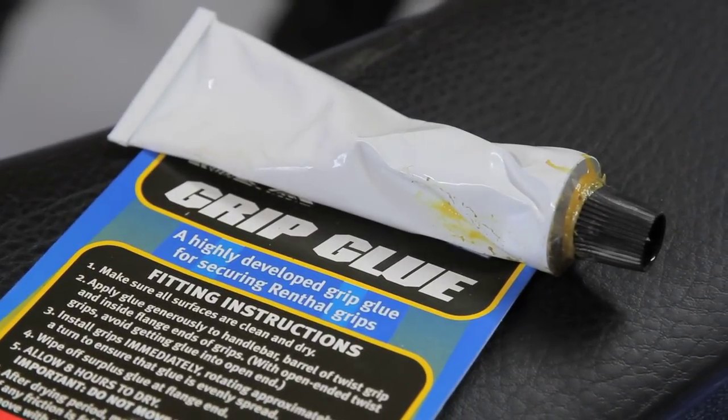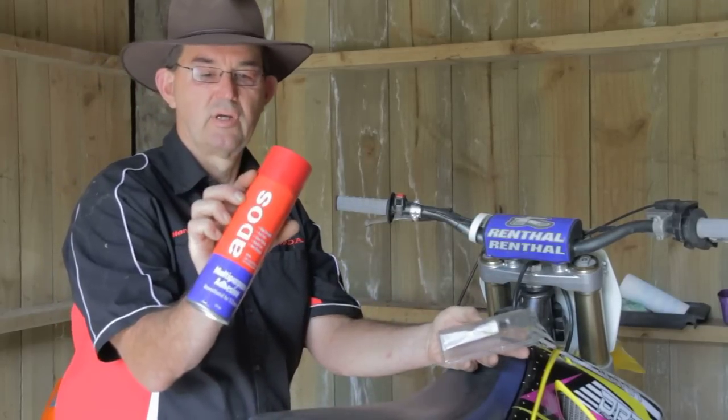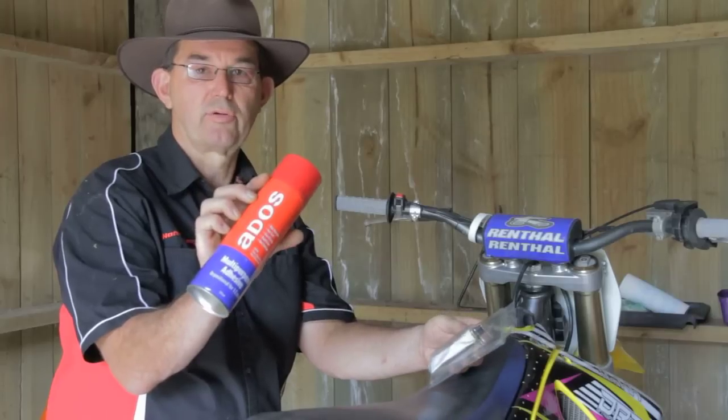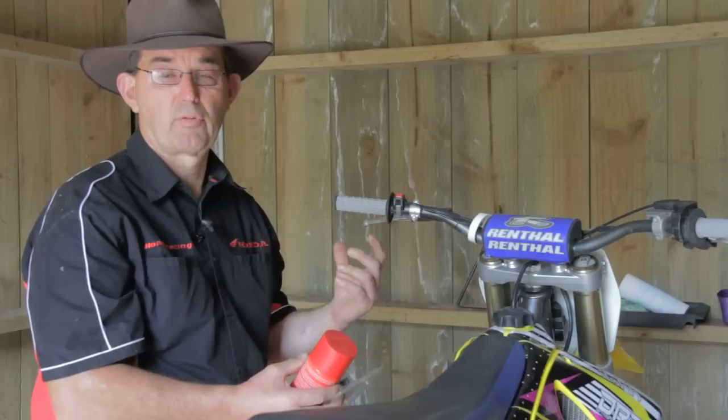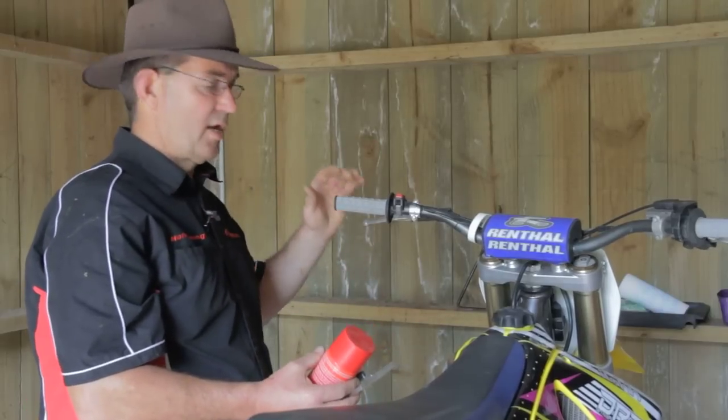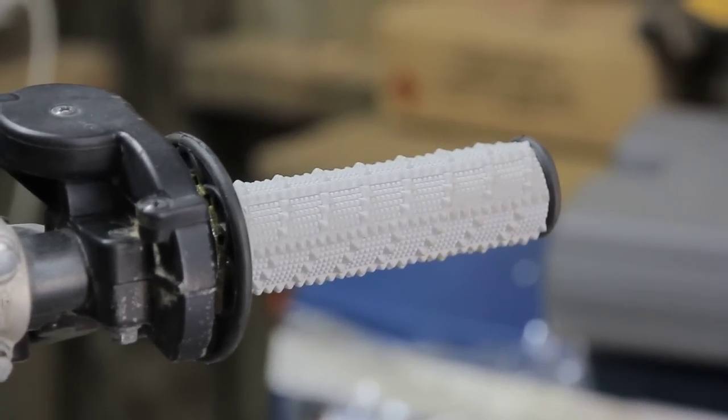The glue to use is you can buy a grip glue in little packets or this ADOS spray-on glue. I prefer the spray-on glue, it's less messy. Put the glue inside the rubber grip and on the handlebar, slide it on and get in the position. Like all good cooking shows, this one has been pre-glued.